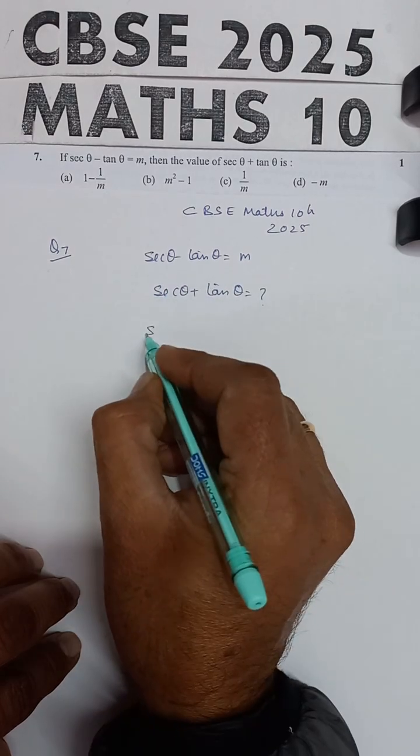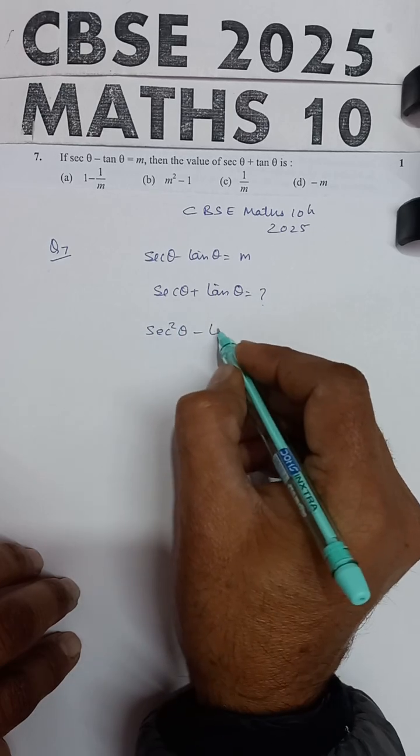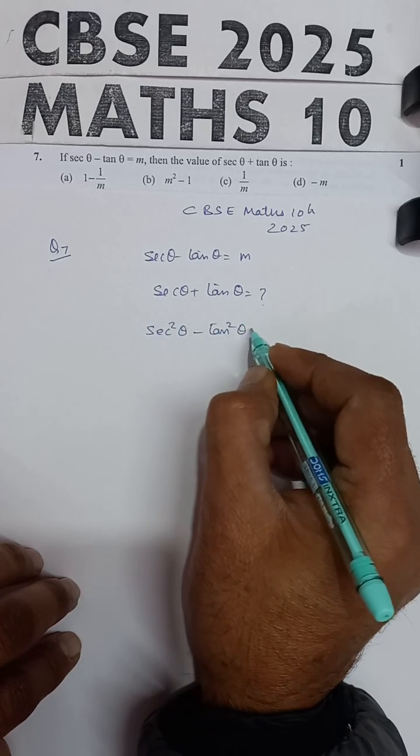Now the concept used, that is the identity that sec square theta minus tan square theta, this is equal to 1.